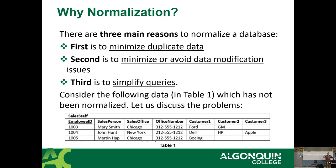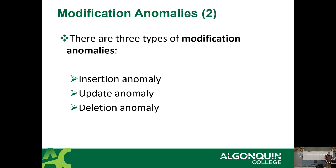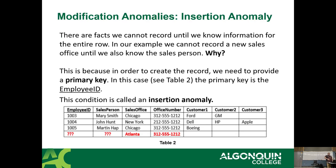If John Hunt quits, we lose the fact that we know anything about the New York office, and that Dell, HP, and Apple were customers — because deleting John deletes that whole row. That's a deletion anomaly: when you delete one piece of information, you lose unrelated data with it. The three types are: insert, update, and delete anomalies.